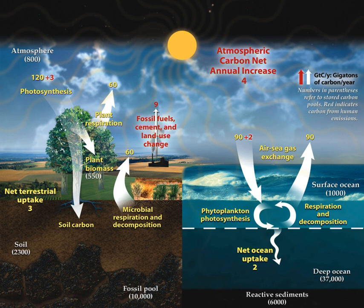The global carbon cycle is now usually divided into the following major reservoirs of carbon interconnected by pathways of exchange: the atmosphere, the terrestrial biosphere, the ocean including dissolved inorganic carbon and living and non-living marine biota, the sediments including fossil fuels, freshwater systems, and non-living organic material, and the Earth's interior, mantle and crust. These carbon stores interact with the other components through geological processes.